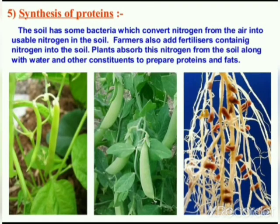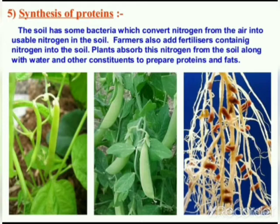After carbohydrate, some plants also synthesize protein. The soil has some bacteria which convert nitrogen from the air into usable nitrogen in the soil. Farmers also add fertilizers containing nitrogen into the soil. Plants absorb this nitrogen from the soil along with water and use it to prepare proteins and fat.